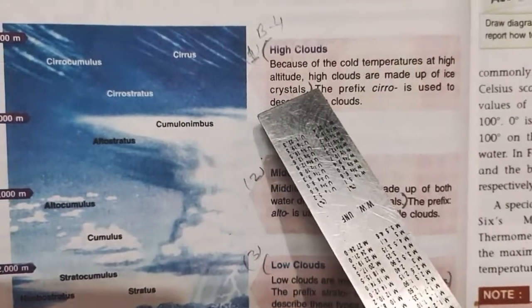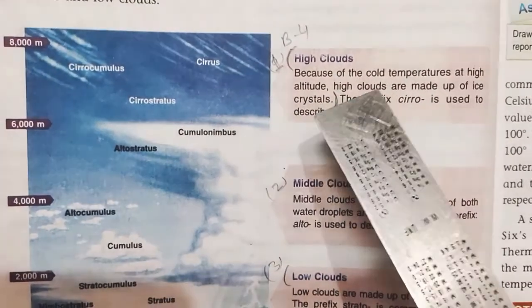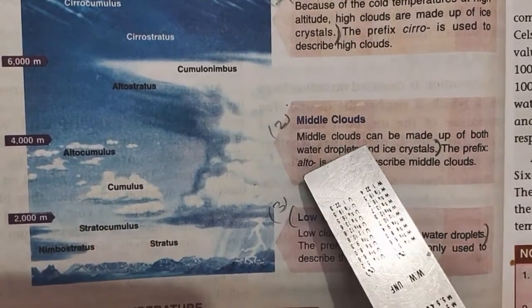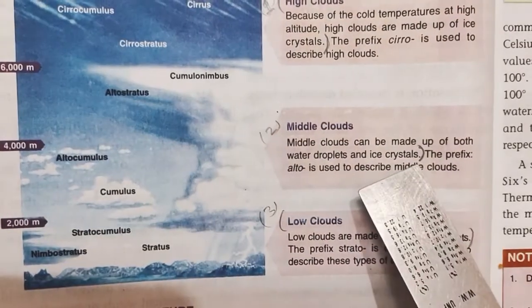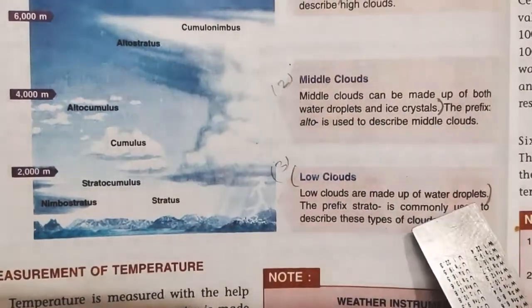High clouds: because of the cold temperature at high altitude, high clouds are made up of ice crystals. Middle clouds: middle clouds can be made up of both water droplets and ice crystals. Low clouds: low clouds are made up of water droplets.